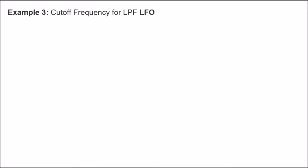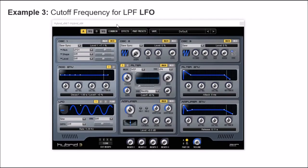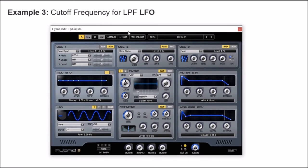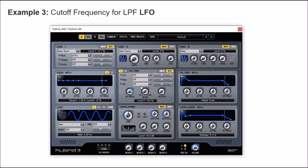For example number 3, I'm going to change the cutoff frequency for a low-pass filter by using an LFO oscillator. So I'm going to the modulation tab of the filter panel and assigning LFO number 2 to this parameter. Let's see this wave and hear the effect.